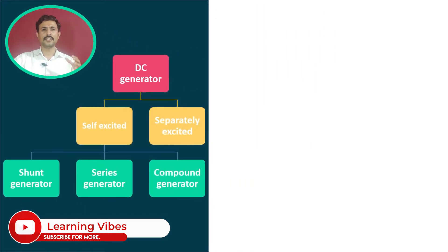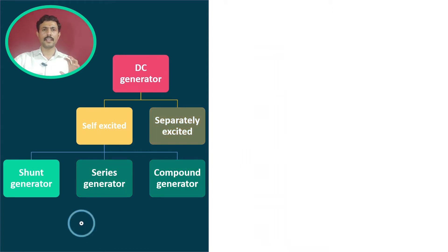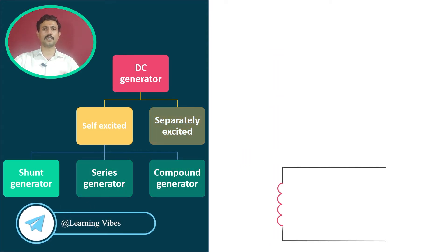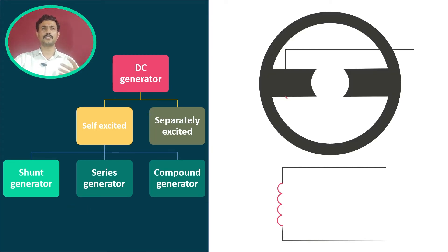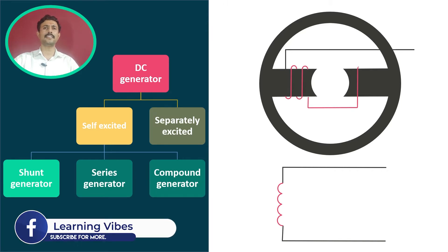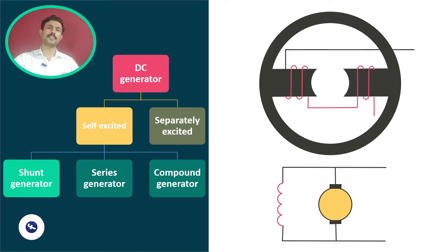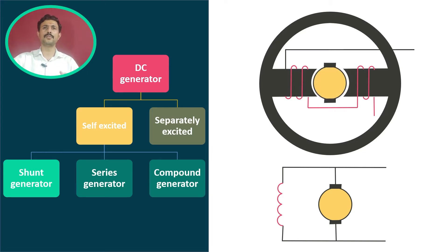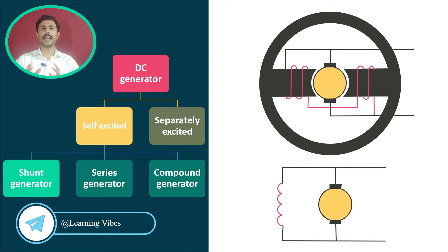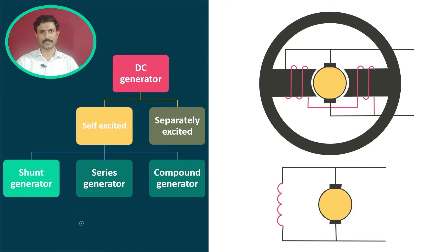In a shunt generator, there is a field winding which is arranged in this manner. If we observe its cross-sectional view, the shunt winding is arranged in this manner. In a shunt generator, the armature is connected in parallel to the shunt winding — or vice versa, the field winding is connected in parallel with the armature winding. In the cross-sectional view, the armature winding is connected in this manner — so this is how the field winding and armature winding are arranged in a shunt generator.